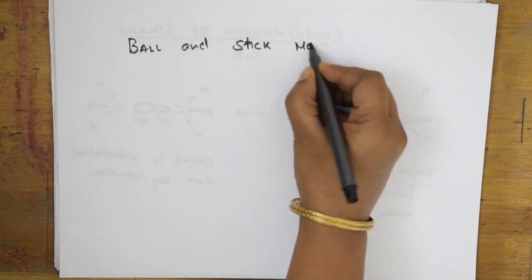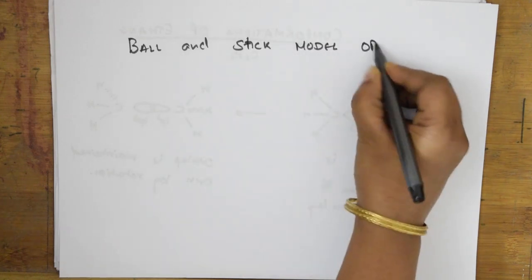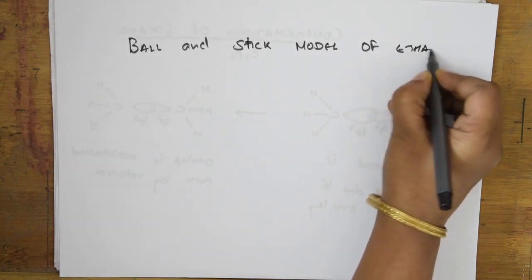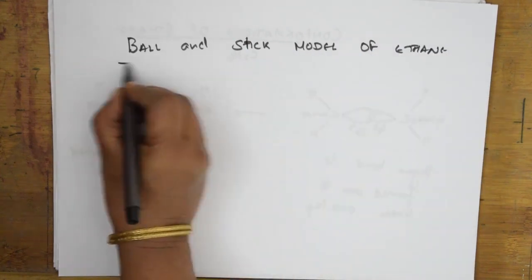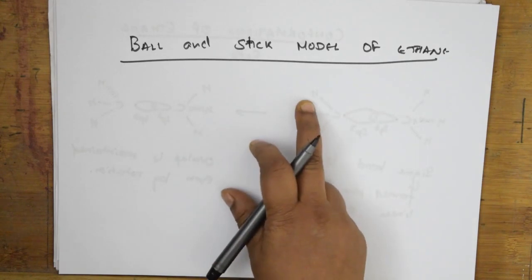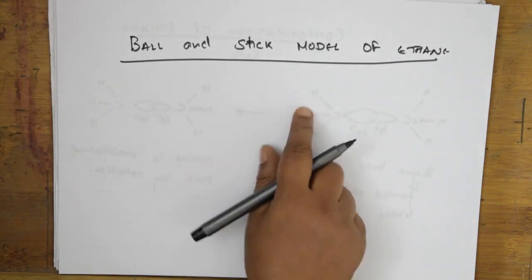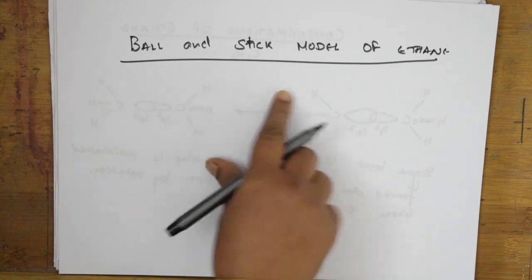Today we will learn about conformations of propane and conformations of butane. For propane Newman projection conformations, I will draw the eclipsed form — where the front carbon has CH3, hydrogen, hydrogen and the rear carbon's hydrogen is very close by — and the staggered form where groups are equally spaced. Rotation happens between C1 and C2 carbons.